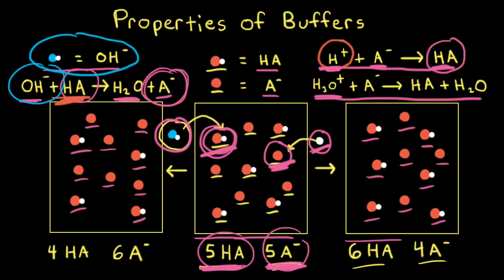Let's summarize how buffer solutions work. If we add a small amount of acid H+ to a buffer solution, the conjugate base A- that's present neutralizes the added acid, and therefore the buffer solution resists a change in pH. And if we add a small amount of base, the weak acid that's present will neutralize the hydroxide anions, and therefore the buffer solution resists a change in pH.